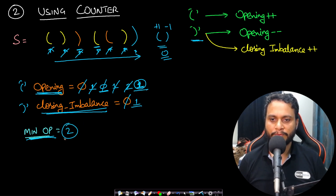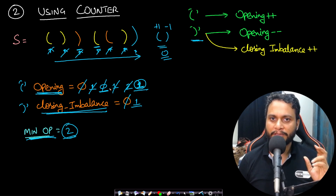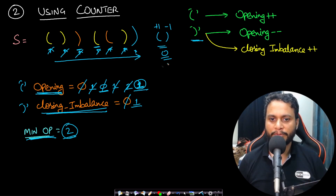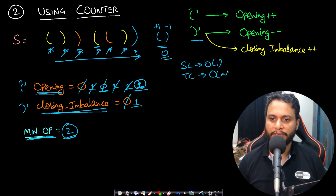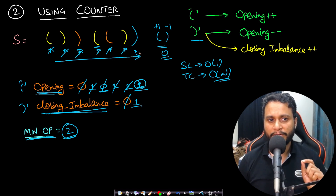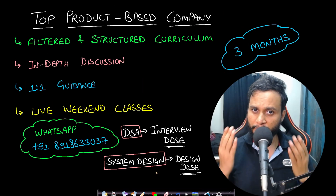The minimum operations must balance both opening and closing braces, so we add both values — one plus one equals two. This approach has O(1) space complexity and O(n) time complexity, making it more optimal than the stack approach. Let's now look at the code implementation of both techniques.